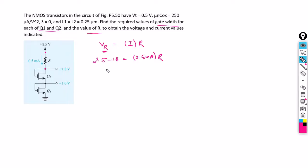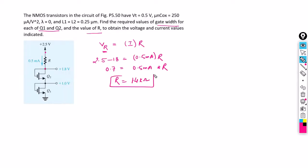So 2.5 minus 1.8 is 0.7 volts, and with 0.5 milliamperes flowing, we can calculate R as 1.4 kilo ohms. This is the value for resistance R.